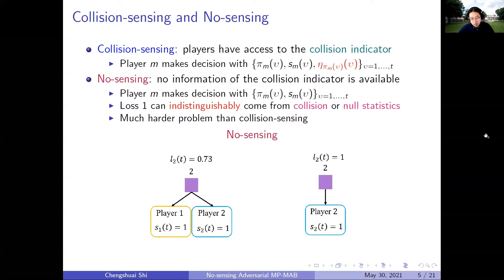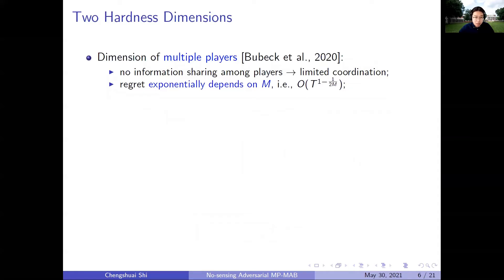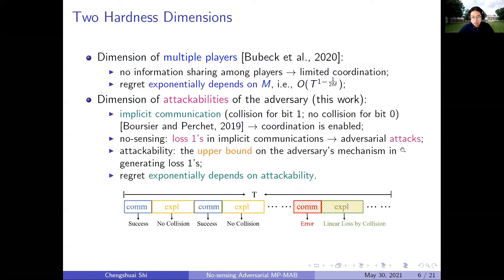This lack of collision information makes the no-sensing setting a much harder problem than collision sensing, and there is limited literature that studies this setting. In this work, we focus on this hard problem, namely the adversarial multiplayer multi-armed bandits in the no-sensing setting. In particular, we discovered that there are two hardness dimensions in this problem. The first one is the dimension of multiple players, which is revealed in the previous work. In particular, it does not utilize any information shared among players, which results in very limited player coordination.